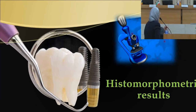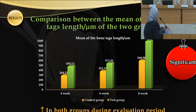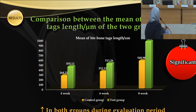Finally, histomorphometric results: in comparison between the mean bone tag length in micrometers of the two groups, this figure shows an increase in both groups during the evaluation period, but the test group showed a highly significant difference compared to the control group.